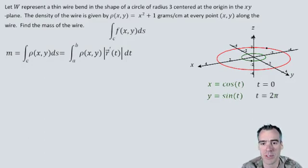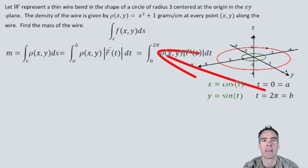These t values when we're starting at zero and ending at 2π for that full loop, those zero and 2π are going to be our a and b. And we found those.